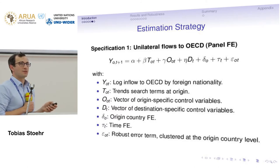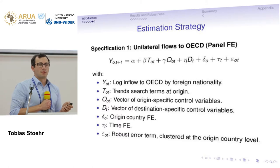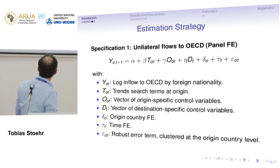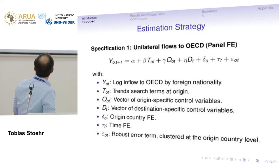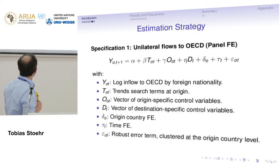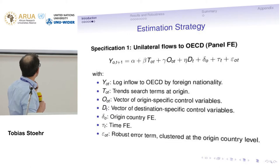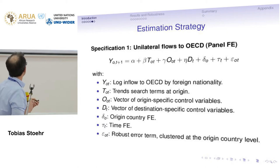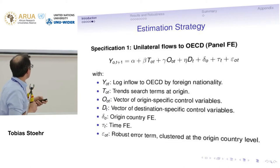We test two specifications. One is a panel fixed effects regression where we have the log inflow to the whole OECD by each foreign nationality. Then we have a vector of time series for each search term, origin-specific control variables like population size and GDP, destination-specific controls like OECD GDP growth, and then fixed effects for country of origin, time fixed effects per year, and keyword term.